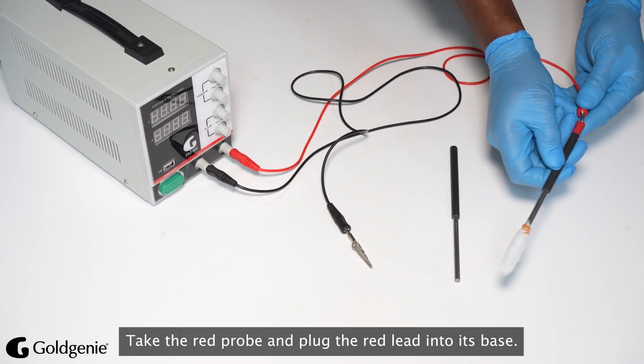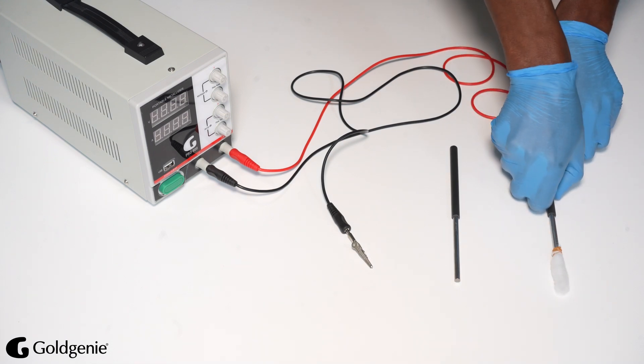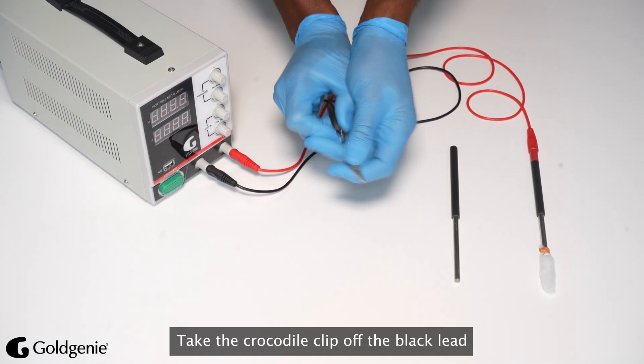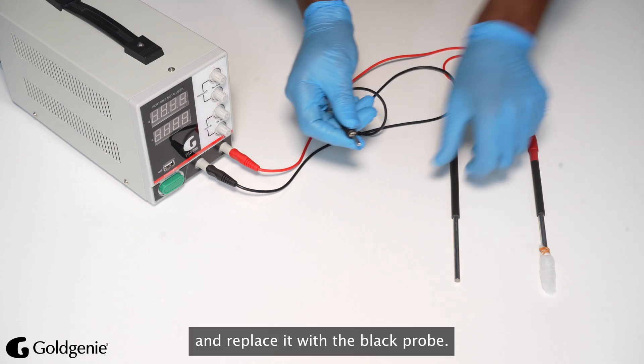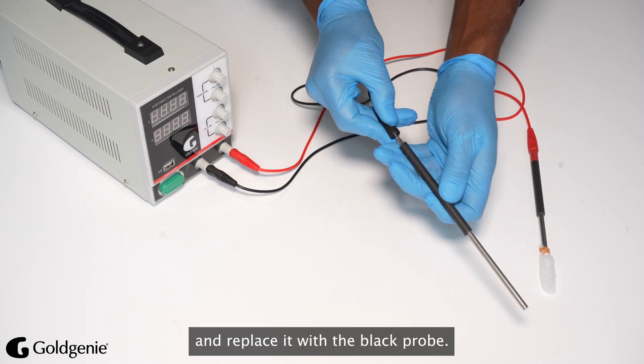Take the Red Probe and plug the Red Lead into its base. Take the Crocodile Clip off the Black Lead and attach it to the Black Probe.